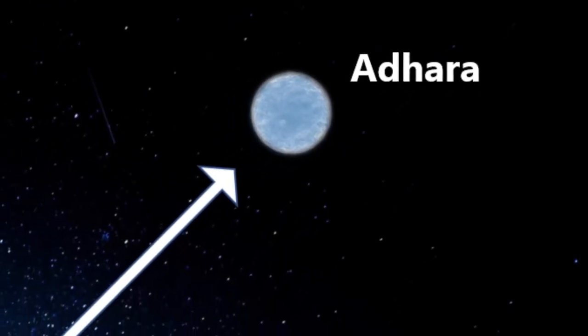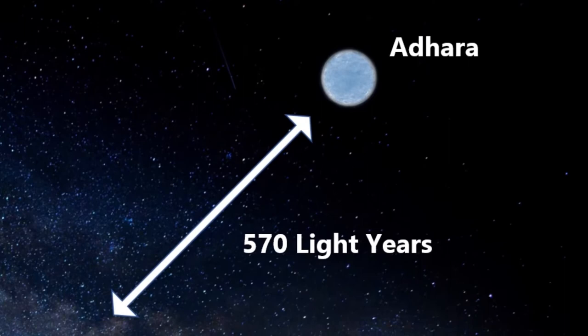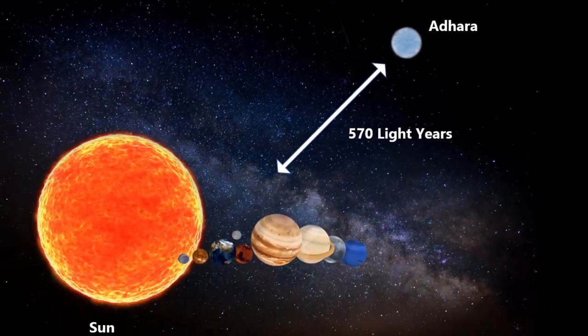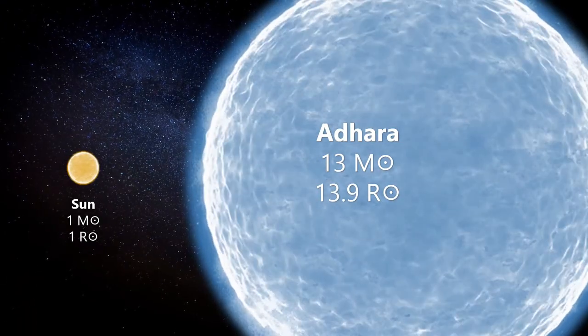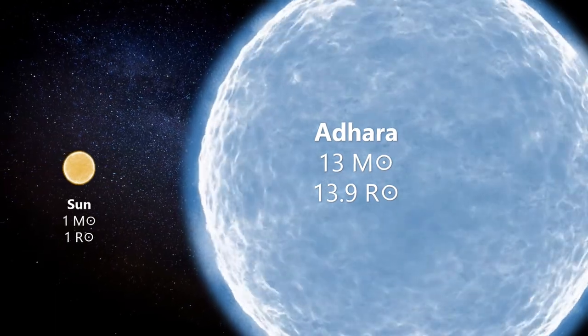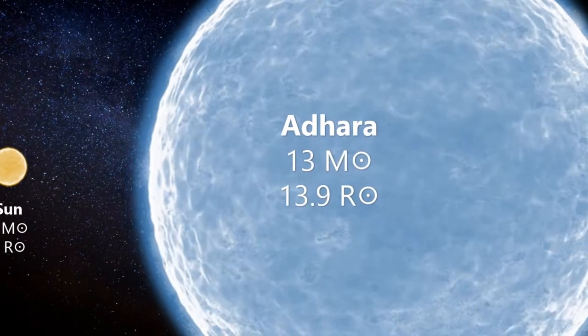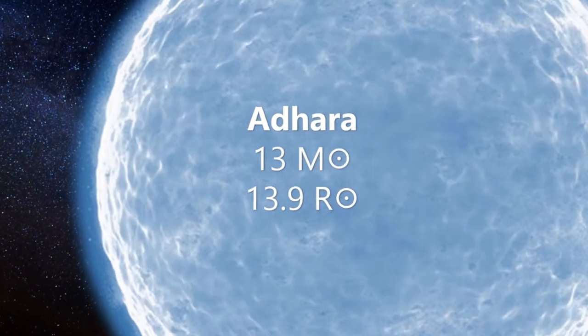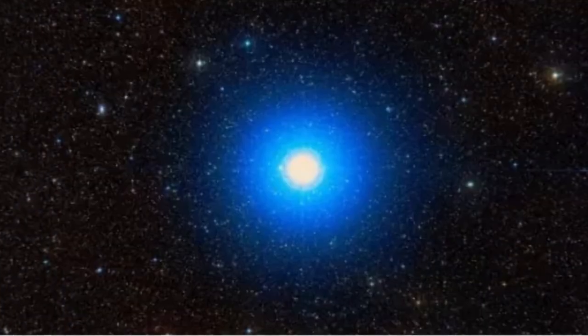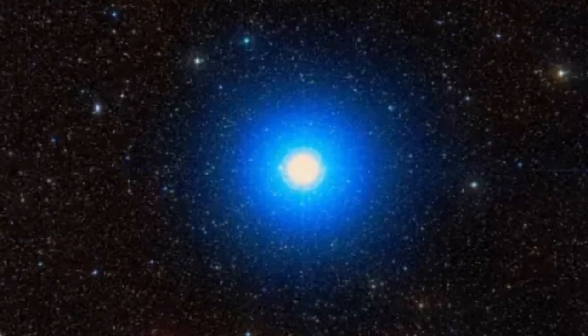Adhara lies some 570 light years from Earth. Indeed, although very large compared to the Sun, with around 13 solar masses and 14 solar radii, Adhara isn't all that impressive when compared to some of the supergiant stars in our local area. B-class Adhara would be just a run of the mill giant if it weren't for one thing.